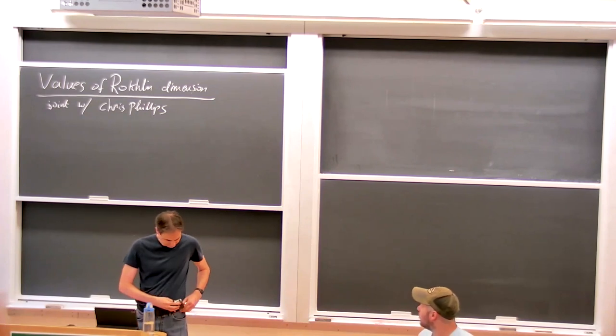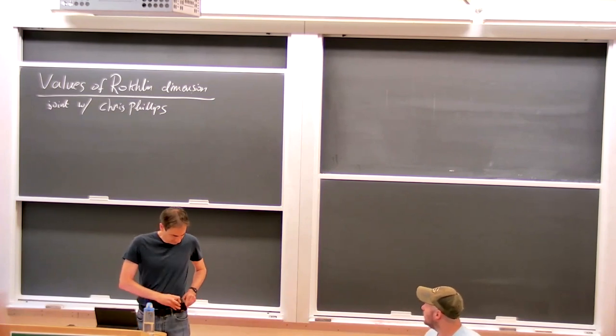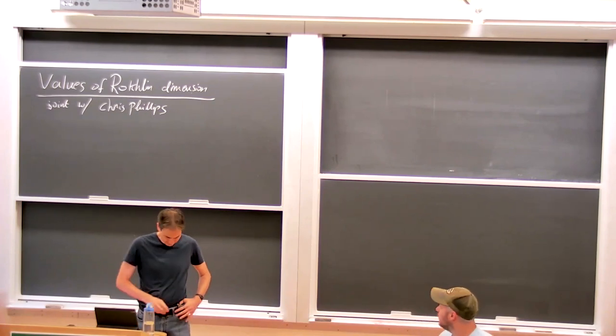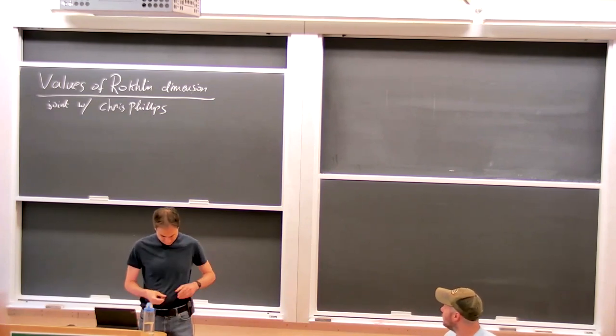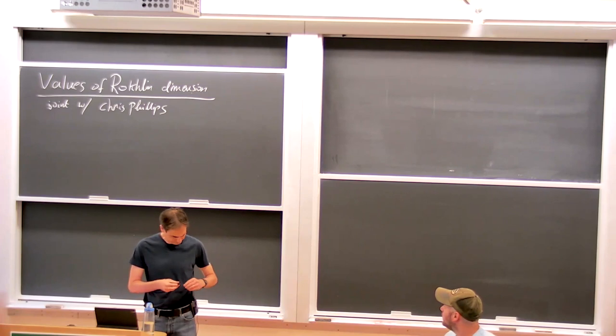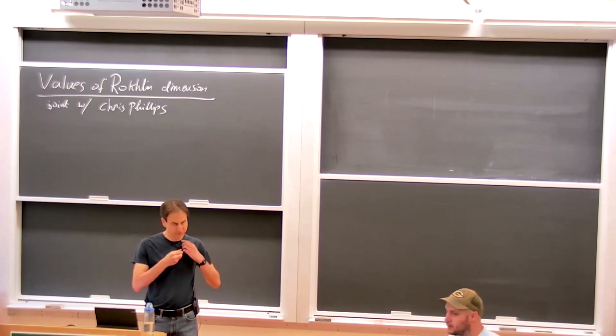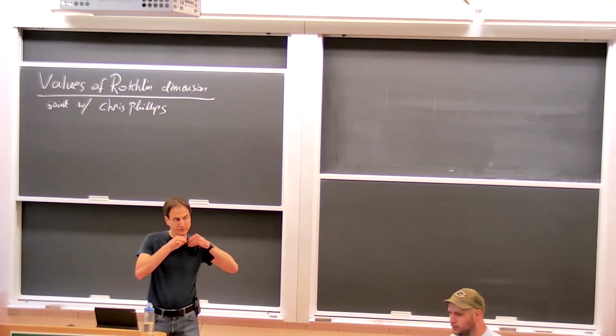Our first talk of the morning is Ilan Hirschberg from Ben-Gurion University. He will talk about values of Rokhlin dimension for finite group actions on C*-algebras.